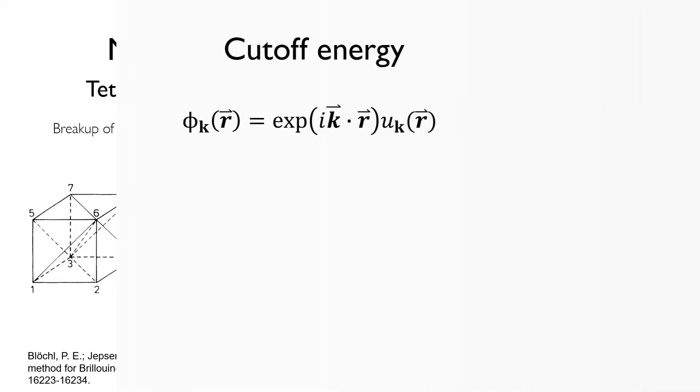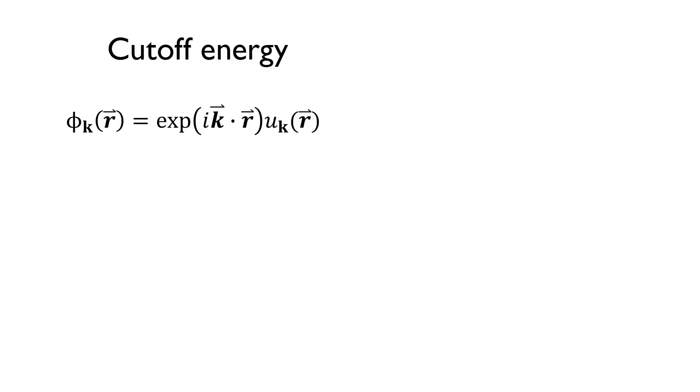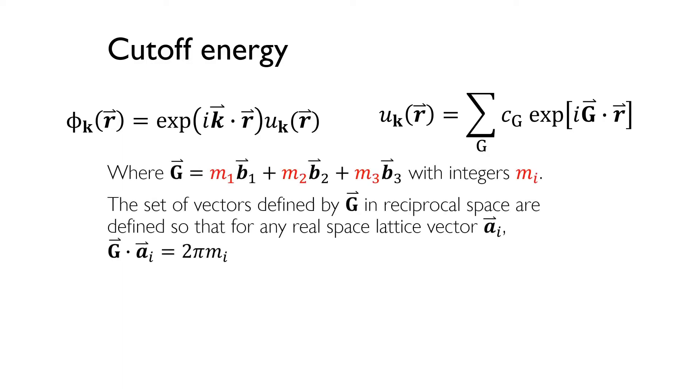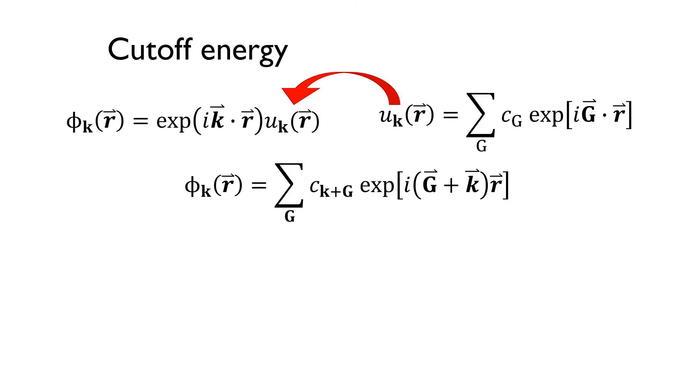This whole discussion of k-points in k-space started with Bloch's theorem, which tells us that the solutions of the Schrodinger equation for a periodic lattice have the form phi k is equal to e to the i k dot r times the function u k. The function u k has the same periodicity as the supercell. This periodicity means it can be expanded in terms of a special set of plane waves, where summation is over all vectors defined by g equals m1 b1 plus m2 b2 plus m3 b3 with any integer values for m i. The set of vectors defined by this formula in reciprocal space are defined so that for any real space lattice vector a i, g dotted into a i is equal to 2 pi m i. Combining these two equations gives the following formula.